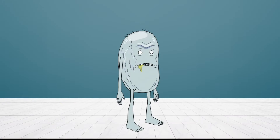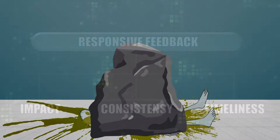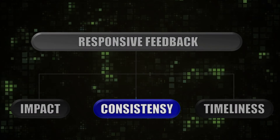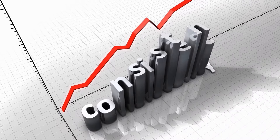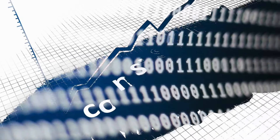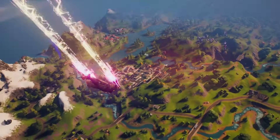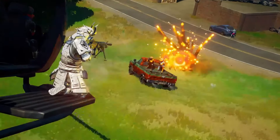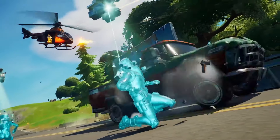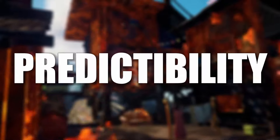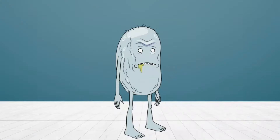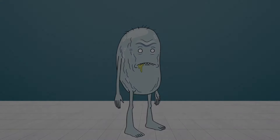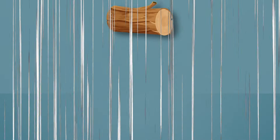The second element is consistency. This basically means ensuring consistency in the feedback your game provides. Once you've established a pattern, you need to make sure that the same level and style of feedback is applied to any other similar action. This helps in building up a sense of familiarity and predictability, which is crucial for your players' immersion.